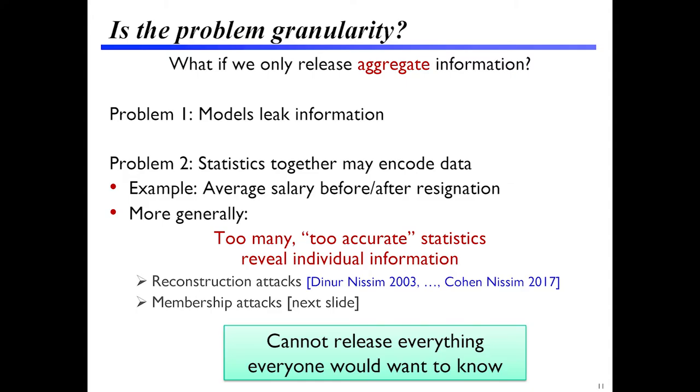Another type of problem is that when you're releasing lots and lots of statistics, many statistics taken together can encode the input data in surprising ways. A really trivial example: suppose I calculate the average salary of the people in this room immediately before and after someone walks out. Either average on its own doesn't tell me much, but if I take those two averages together, I can combine them to learn exactly what that person's salary was.